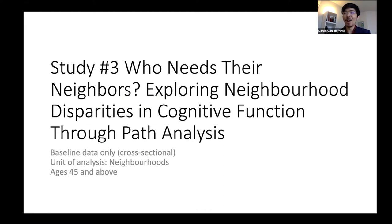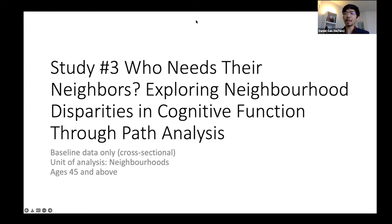Neighborhood cohesion seems to be the more important exposure variable. More neighborhood cohesion means more social support — measured with the MOS Social Support Scale — and then that leads to decreased loneliness, measured with the UCLA three-item scale, and then that leads to a decrease in depressive symptoms. More loneliness is associated with more depressive symptoms, as expected. We have good model fit in this case, which is a way of assessing the rigor of path analysis.